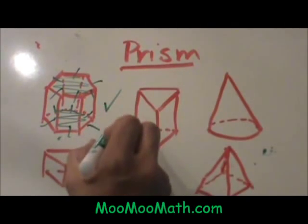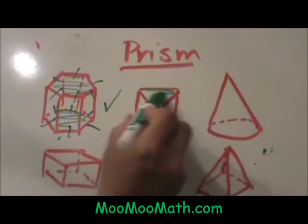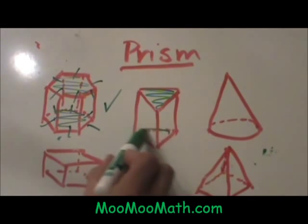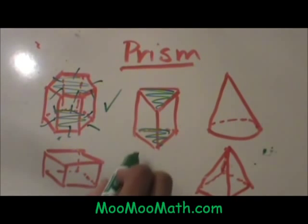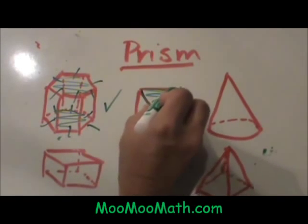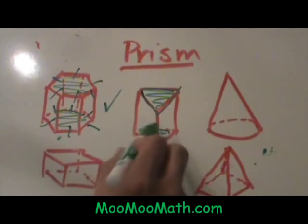Let's look at this one in the center. We have a base here and it is parallel to a base here. This one is also a prism and this would be called a triangular prism.